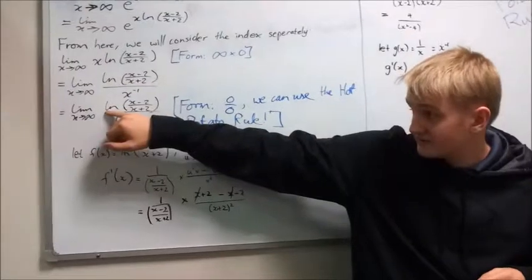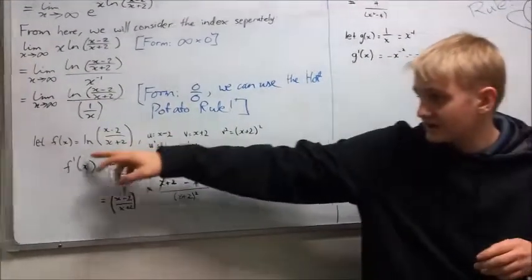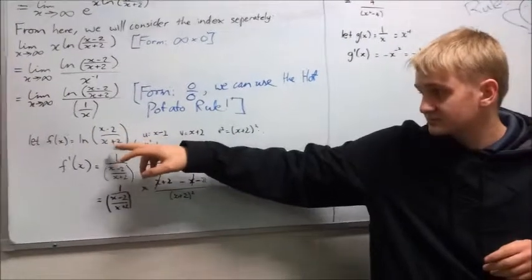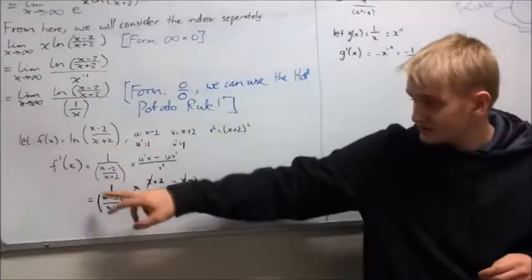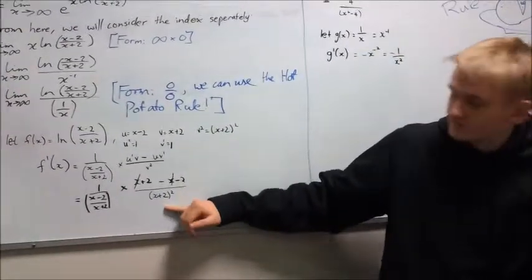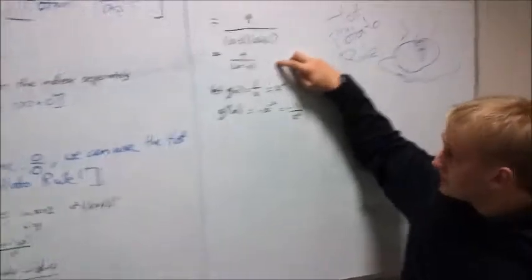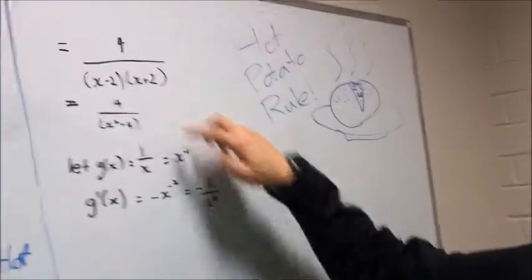So first we'll use our f(x) which is equal to ln[(x-2)/(x+2)]. So we differentiate it, and we follow through, cancel stuff out. Eventually it equals 4/(x²-4).